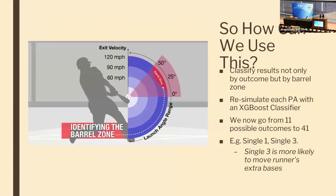We also have the barrel zone — a range of exit velocity and launch angle where hitters have the most success. There are four other zones of varying power levels: one is the weakest, four is the hardest, and five is the barrel zone. I used this to create new result labels — instead of a weak single just being called a single, we can now label it single-one.